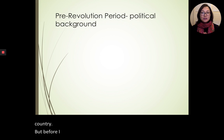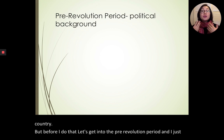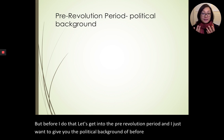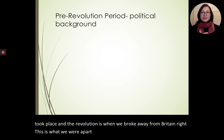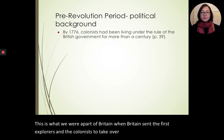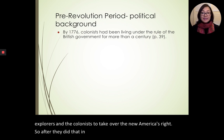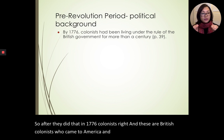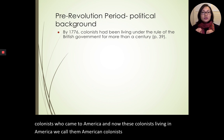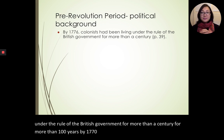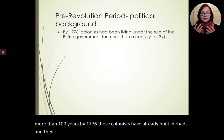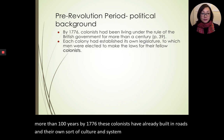Before I do that, let's get into the pre-revolution period. I want to give you the political background of before the revolution ever took place. The revolution is when we broke away from Britain. This is when we were a part of Britain, when Britain sent the first explorers and colonists to take over the new Americas. After they did that, these British colonists came to America and we call them American colonists.